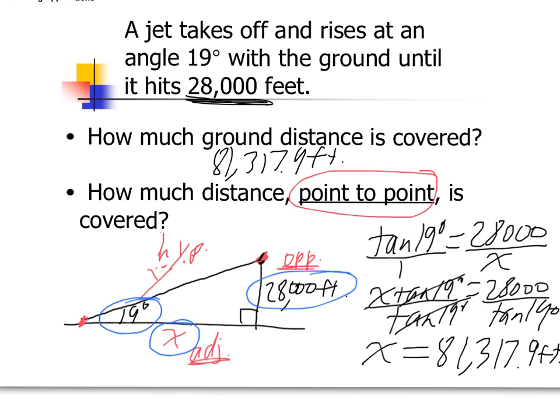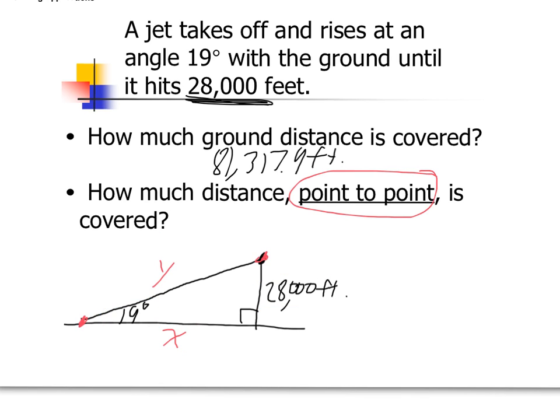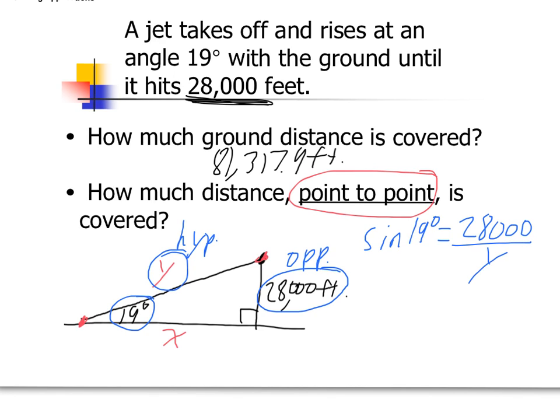Okay, now let's go ahead and find y. So I'm going to clear this out. Okay, so now to find y, to find the point to point distance, I'm going to use the same angle. Now I'm going to find y. And I'm still going to use that 28,000 feet because that was what was originally given to me. So the 28,000 is the opposite leg. The y we already said was the hypotenuse. So this time, which trig function am I going to use? I'm going to use sine. So the sine of the angle, 19, is equal to the opposite, which is 28,000, over the hypotenuse, which is y.